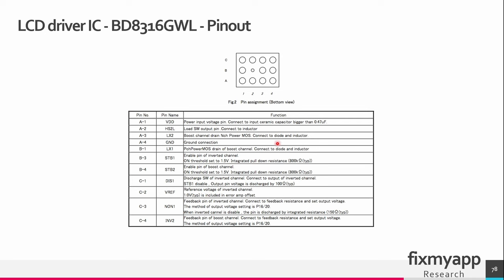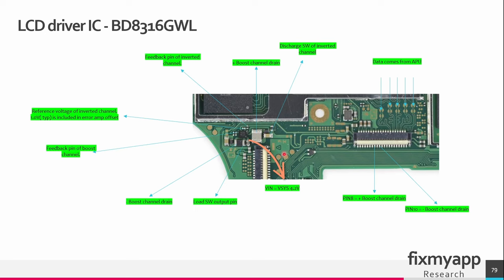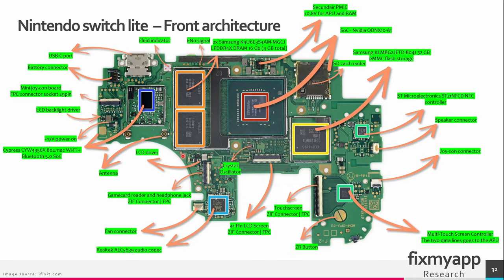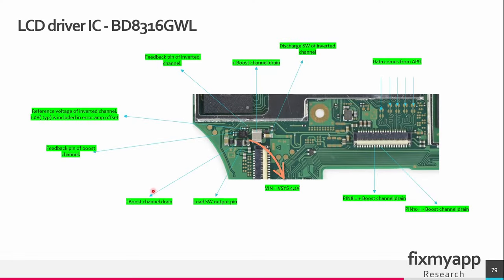The positive boost channel LX1 and the inverter channel on LX2 pin are of interest. Also the enable signals on STB1 and STB2 pins must be present. The LCD driver is located near the game card controller. This will send the positive and negative power supply to this LCD connector. The positive power can be found on this inductor and the negative power on this inductor. On this capacitor, the input voltage of 4.2V can be measured. The feedback pins for channel 1 and channel 2 are located here. The display data comes from the APU — these are the data lines — and they will go to this display connector. From here it will go to the LCD display to show an image, text or any graphic.